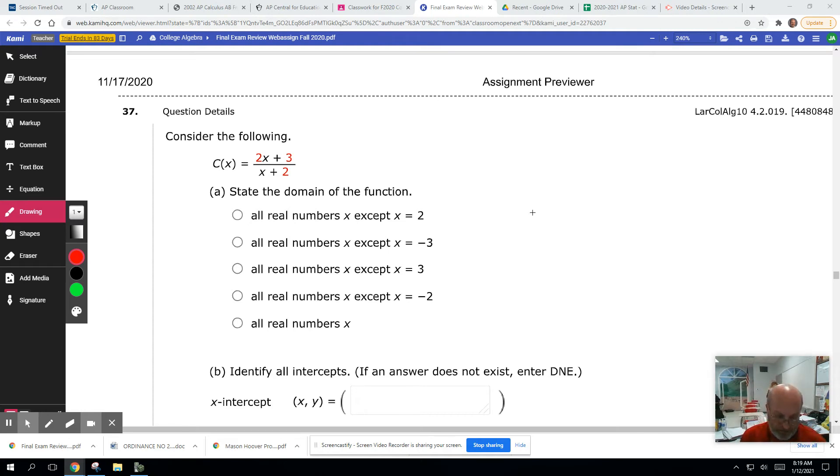Number 37 on the college algebra final exam review for ULR, another rational function. It says consider the following C of x equals 2x plus 3 over x plus 2. State the domain of the function.